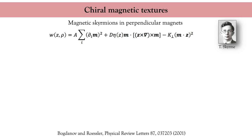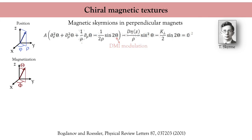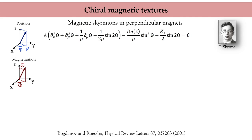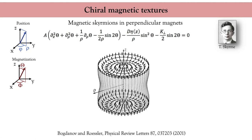In their model, the authors also allowed the magnitude of the Dzyaloshinskii-Moriya interaction to vary in space, though that is not crucial for our discussion. Looking for a cylindrically symmetric solution of this energy functional using the cylindrical parameterization, I obtain a second-order differential equation. The solution is a localized magnetic texture with cylindrical symmetry. If you draw a line along the diameter of the texture, you retrieve the Néel spin spiral discussed above.